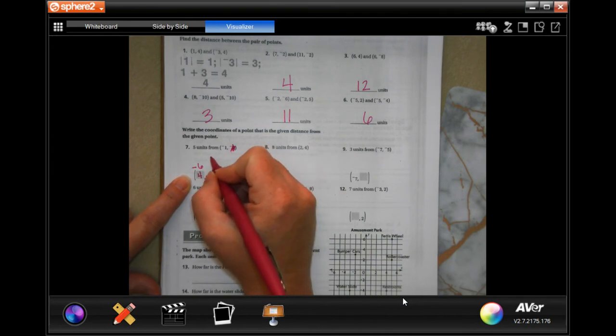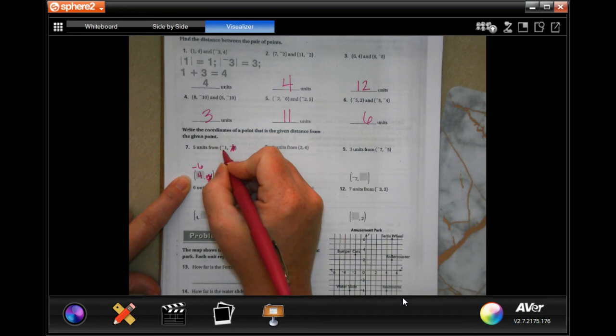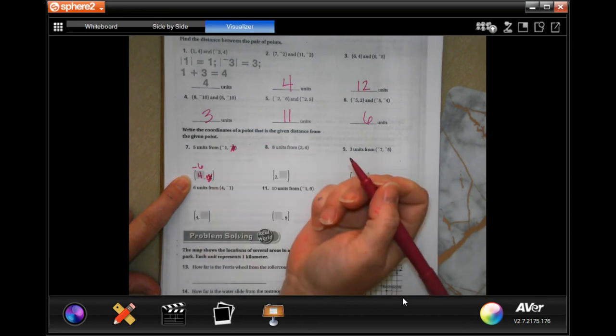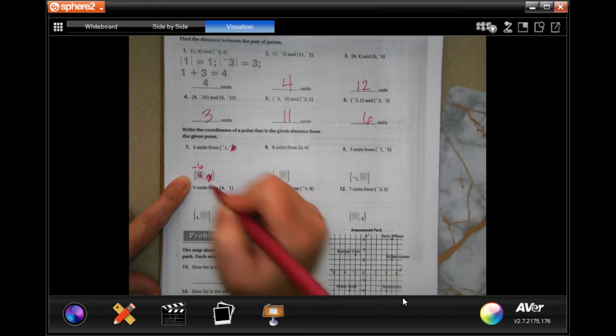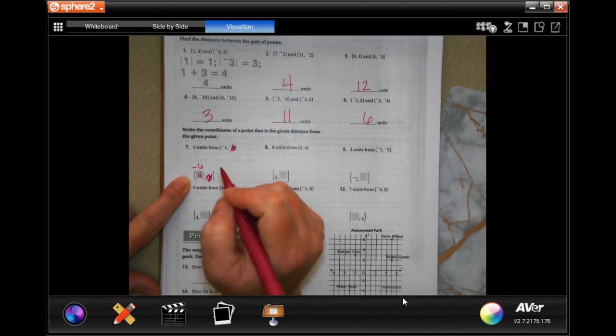So that could either be negative six or it could be four. If I do negative one minus five, then I get negative six. If I do negative one plus five, I get four. So you can have either of those answers, either negative six or four. You do not have to write both of them.